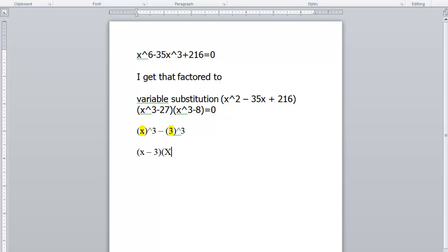it's going to be x minus 3. Then the first term that you have, you square that. You multiply a times b, so you have 3x. And then you square the last term and add 9. So that's how you factor this first portion, x cubed minus 27.